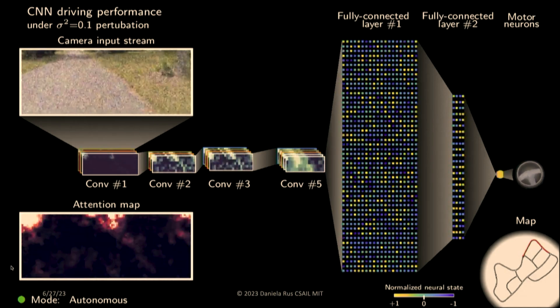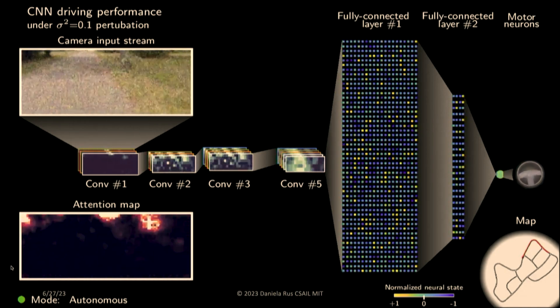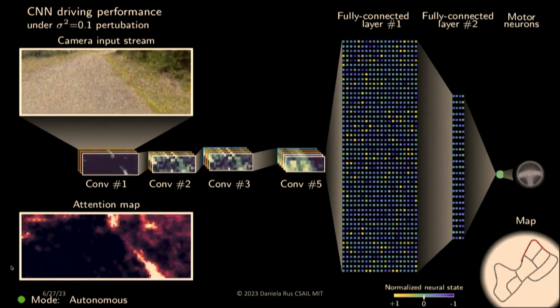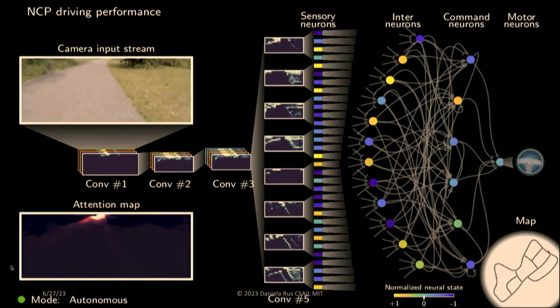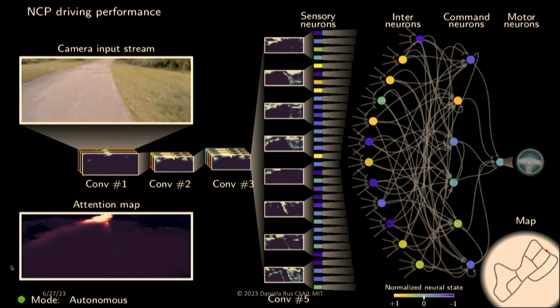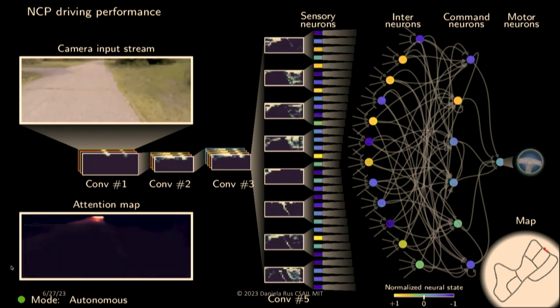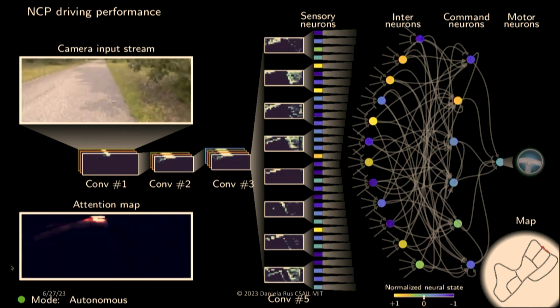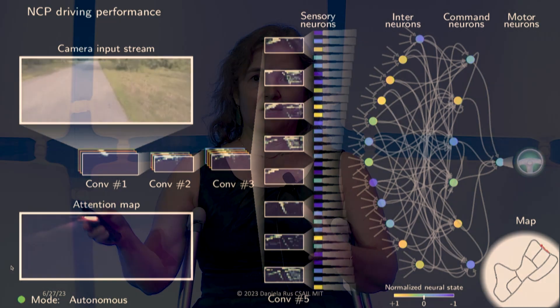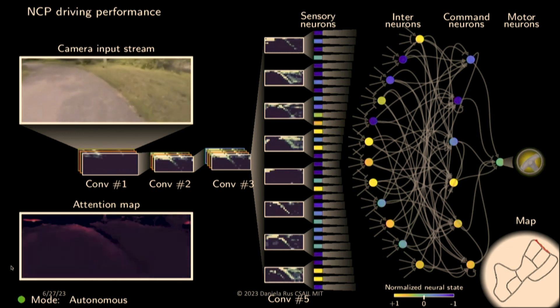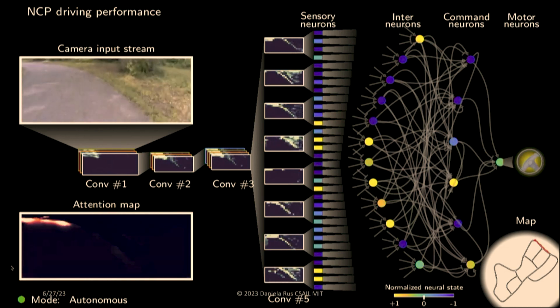This is a bit of a problem. I would like a vehicle whose decisions I can understand. With liquid networks, we have a new class of models. Here you can see the liquid network solution for the same problem. The entire model consists of 19 artificial neurons — liquid neurons. And look at the attention map: look how clean it is and how focused it is on the road horizon and on the sides of the road, which is how I drive.